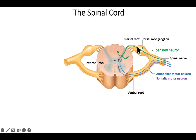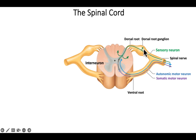This dorsal root is going to have all the sensory neurons — it could be a pain neuron, a temperature neuron, or a touch neuron. Those are all going to be entering using the dorsal root. Their cell bodies — notice this is showing a unipolar sensory neuron — so that would be the structure.